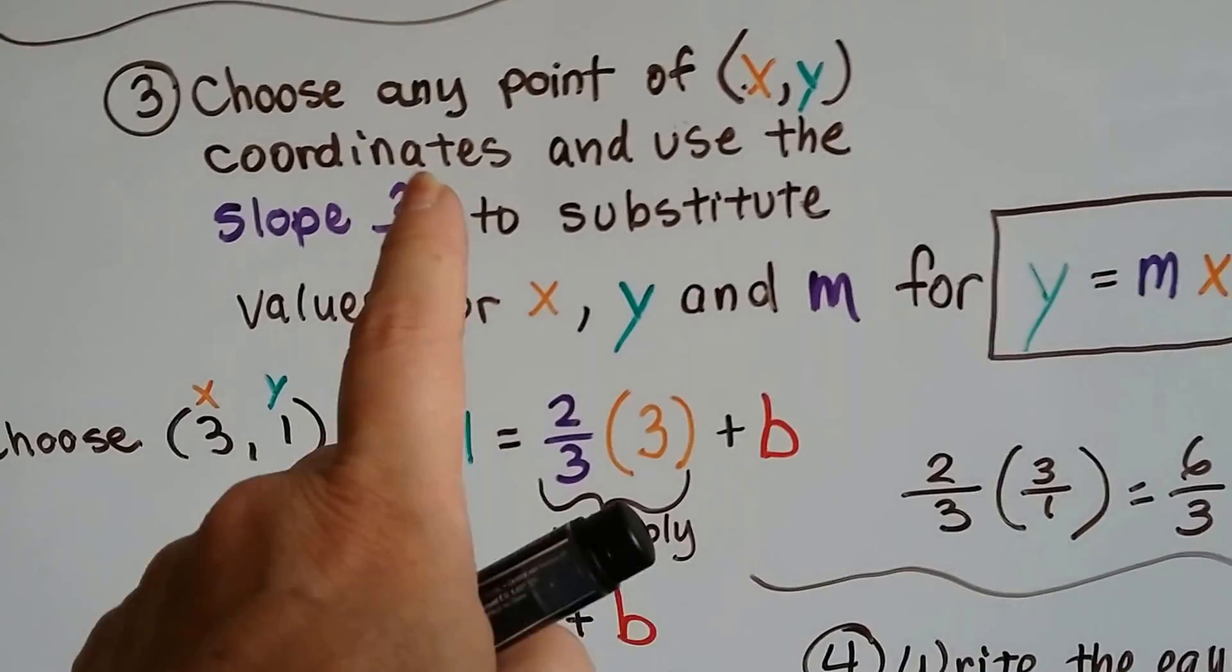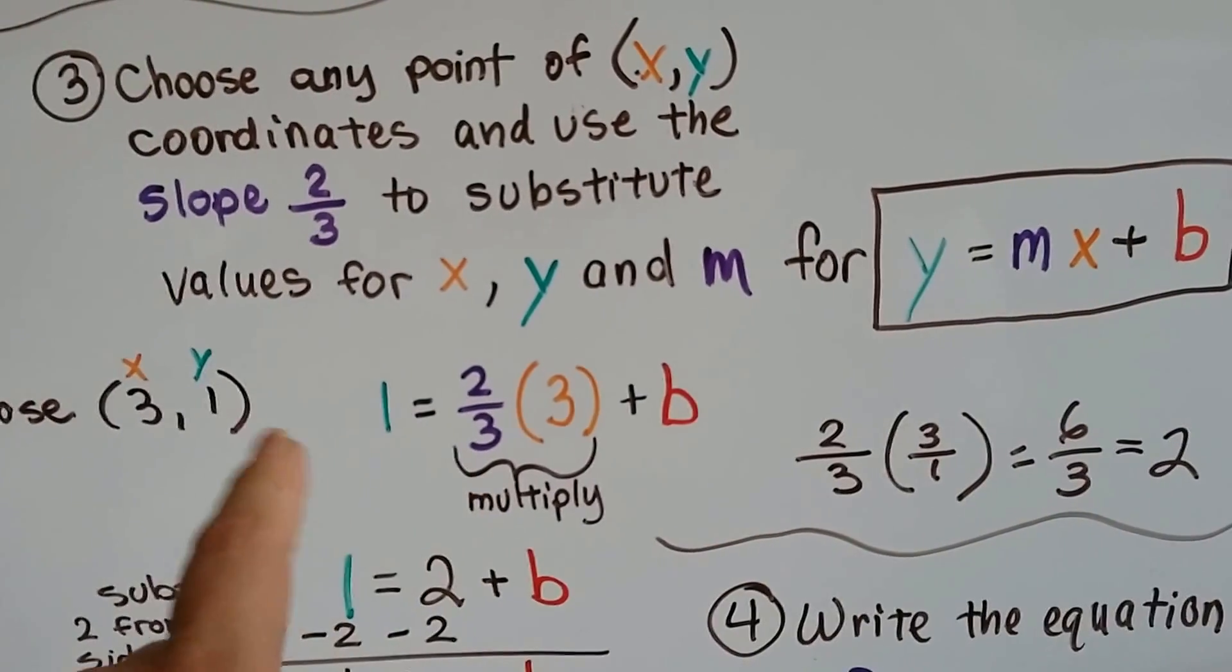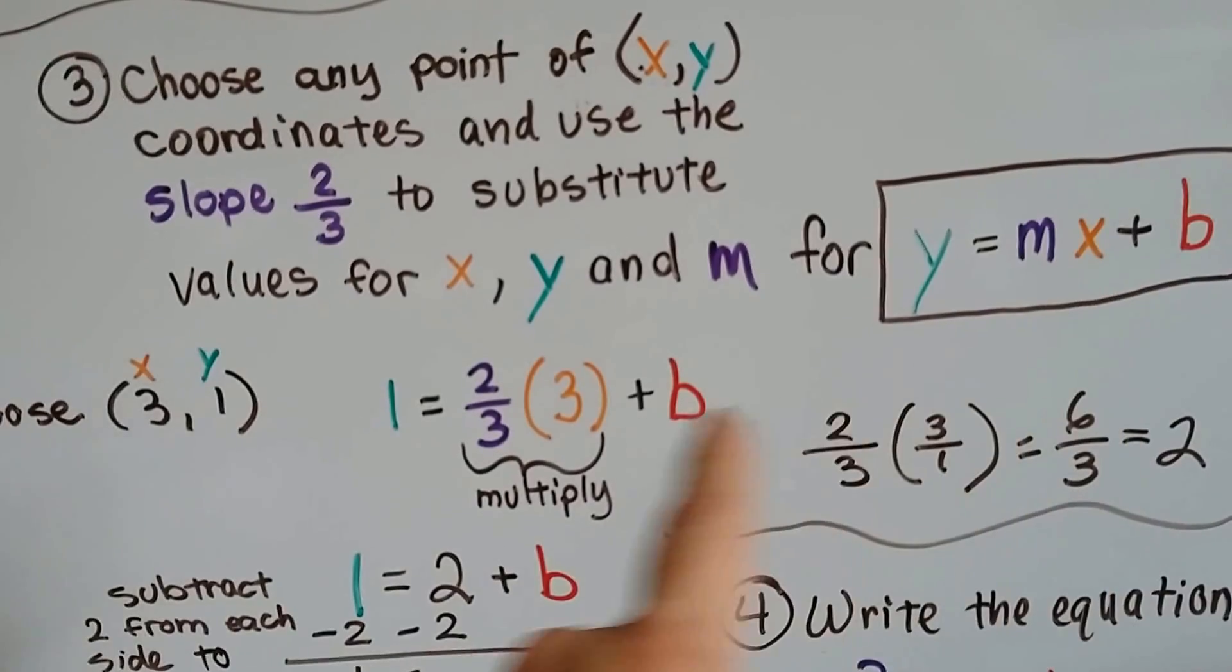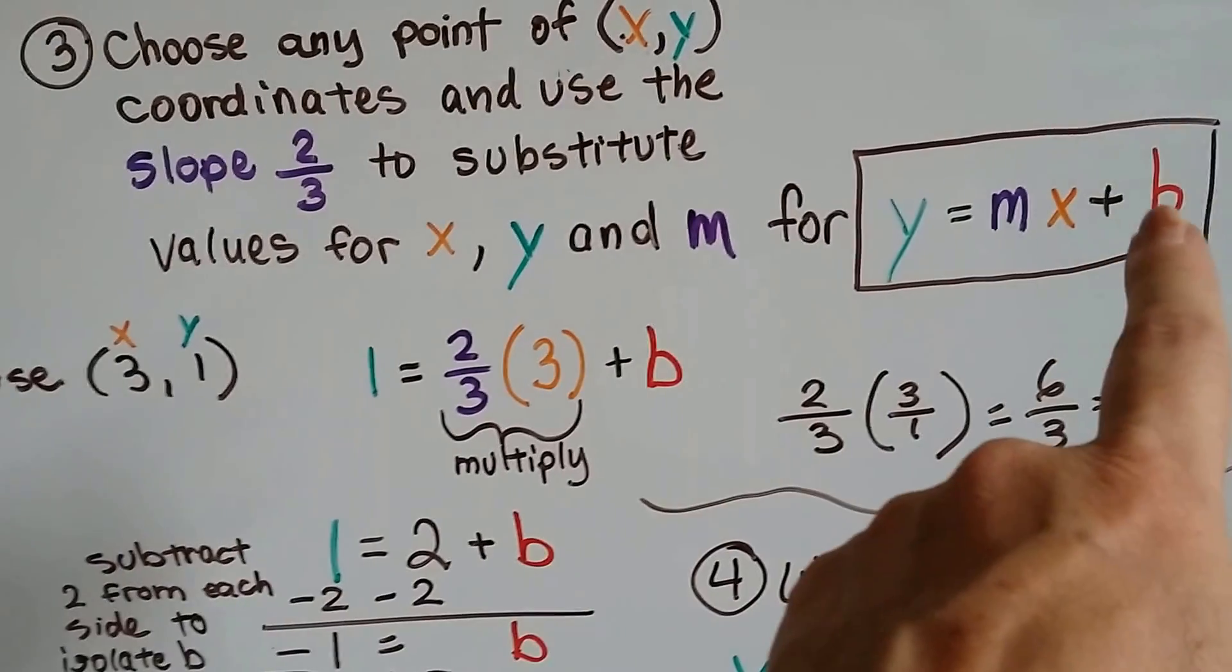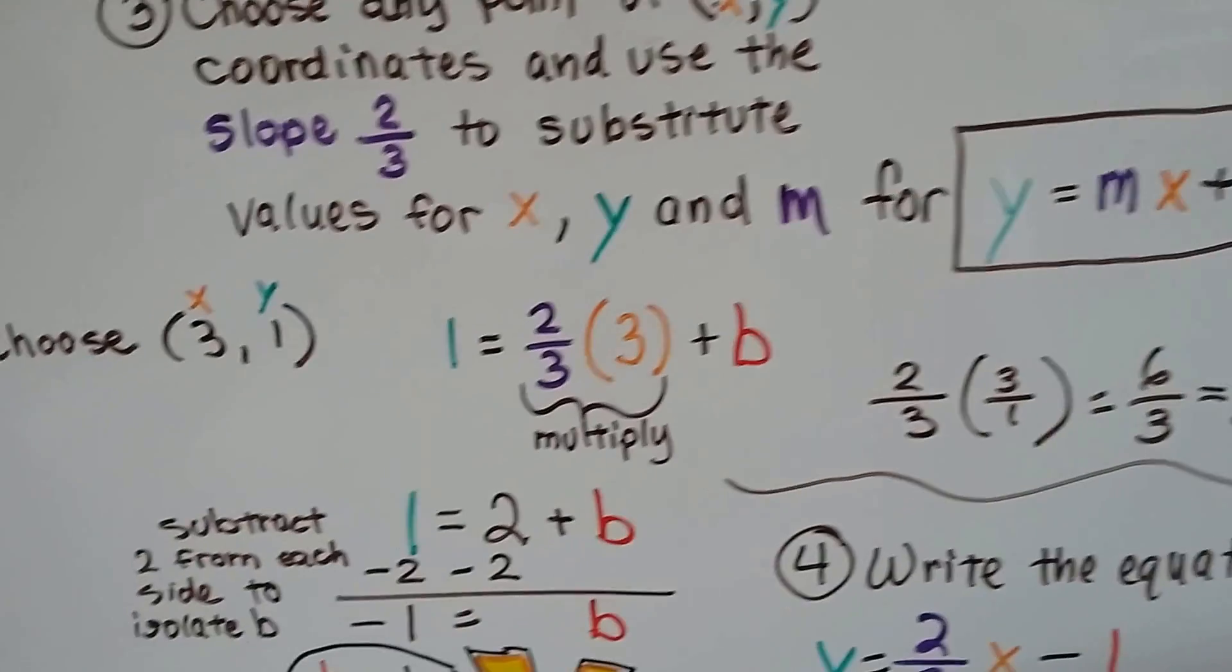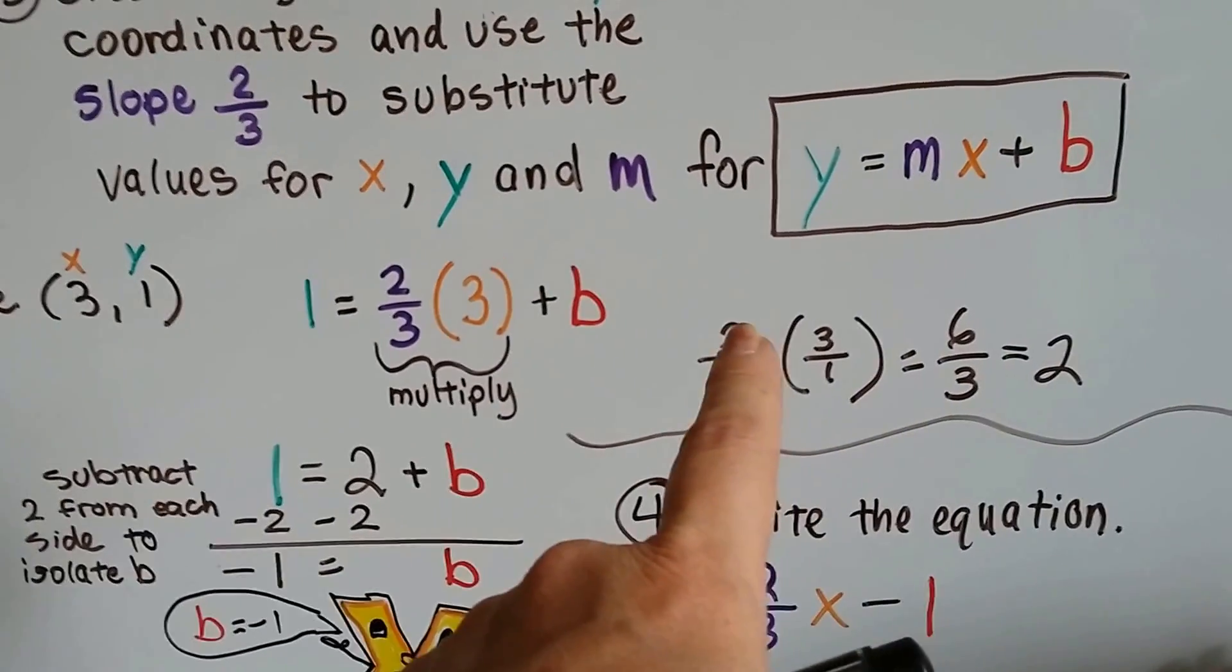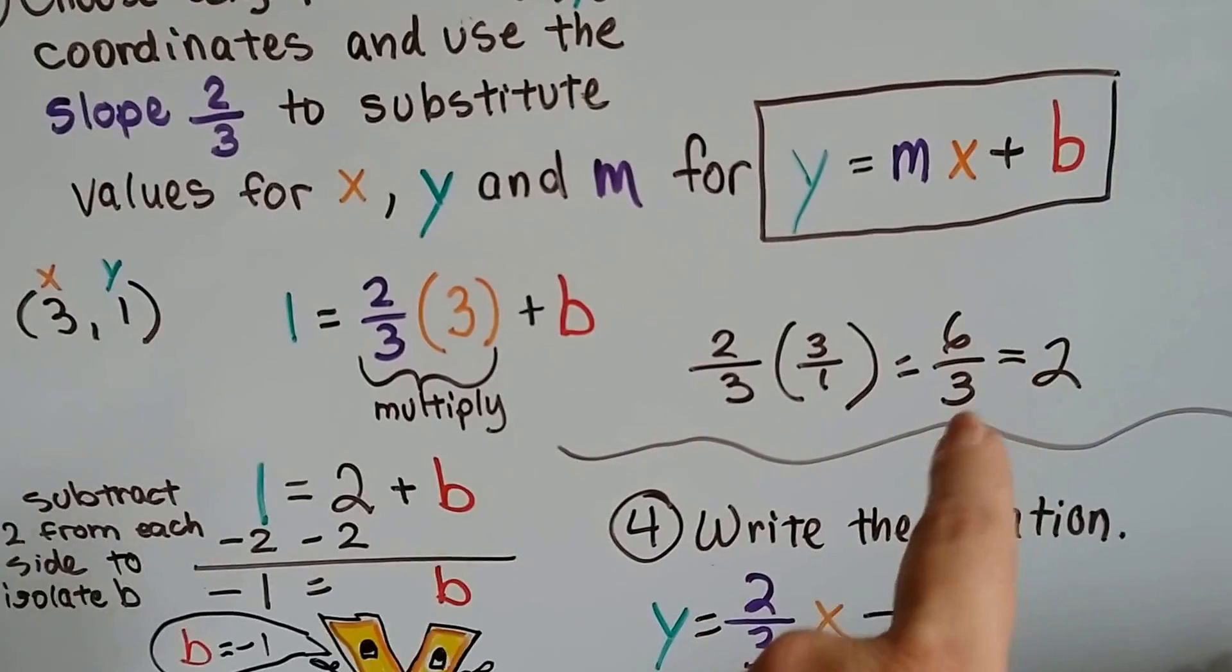So I plug in the 2 thirds slope in the place for the m. I plug in the 3 for my x value. That's the x value. And I've got my plus b at the end. That's what we're trying to find right now. 2 thirds times 3 is 6 over 3, which is 2.